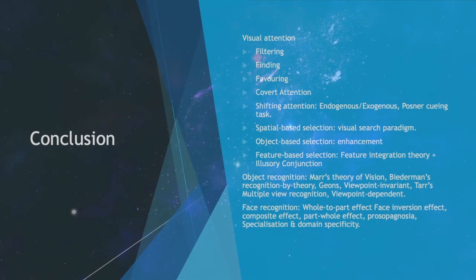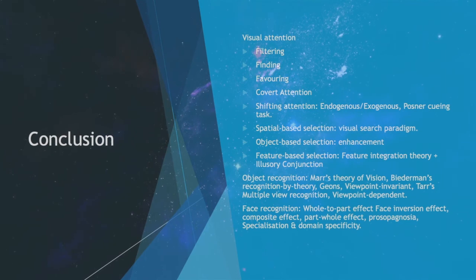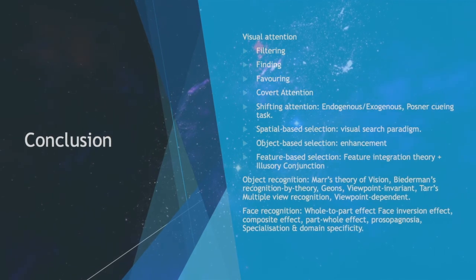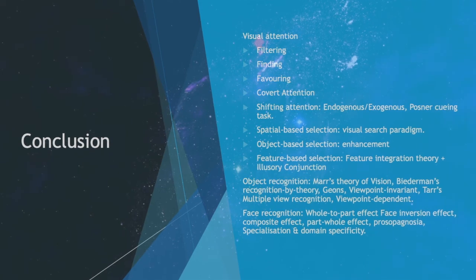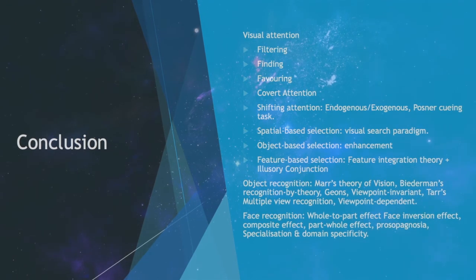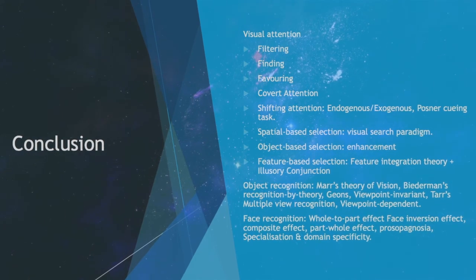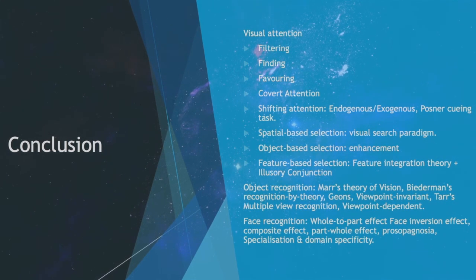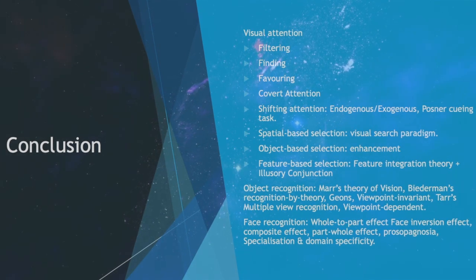In conclusion, we looked at visual attention, filtering, finding, favoring, covert attention, shifting attention, endogenous and exogenous cues, the Posner cueing task, spatial-based selection, visual search paradigm, object-based selection, enhancement, feature-based selection, feature integration theory and illusory conjunction, object recognition, Marr's theory of vision, Biederman's recognition by components theory, geons, viewpoint invariant and Tarr's multiple view recognition, viewpoint-dependent face recognition, whole-to-part effect, face inversion effect, composite effect, part-whole effect, prosopagnosia, specialization, and domain specificity. Join me in the next video where I talk about episodic memory, and you can click on the playlist to look at other cognitive psychology videos. Thanks for watching.